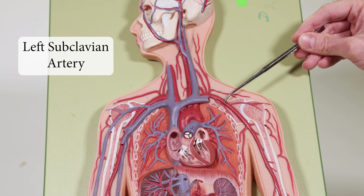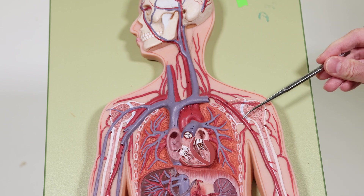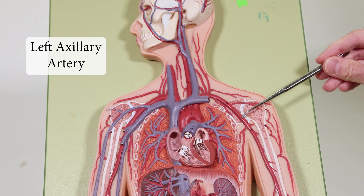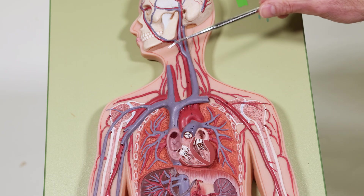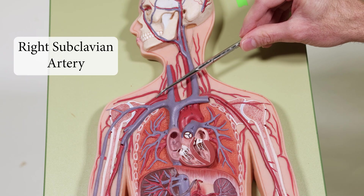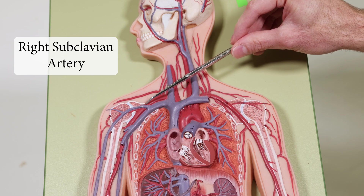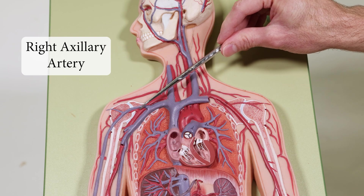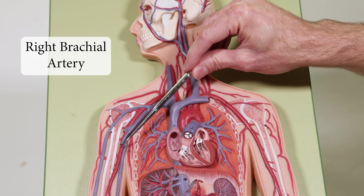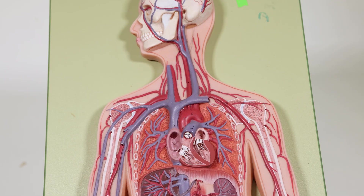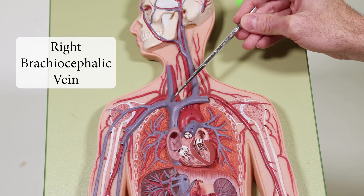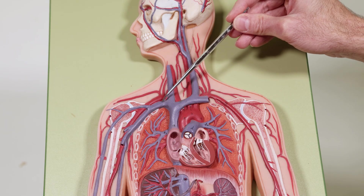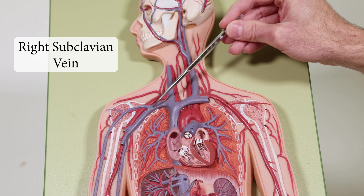Coming into the arm here, the left subclavian artery comes down into the left axillary artery and then into the left brachial artery. On the right side, you have the right subclavian artery, the right axillary artery, and the right brachial artery. On the venous side, the right brachiocephalic vein goes to the right subclavian vein and right axillary vein.